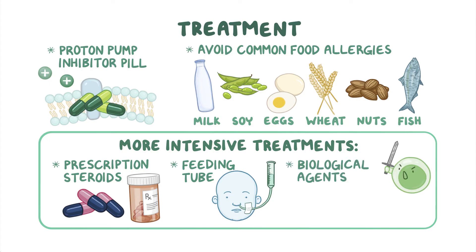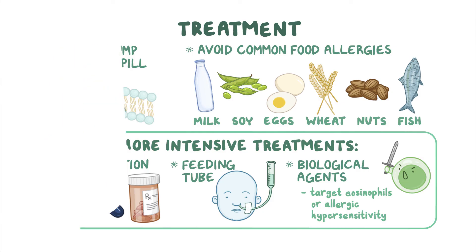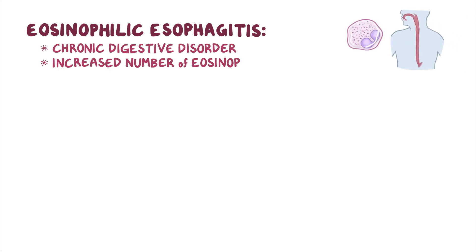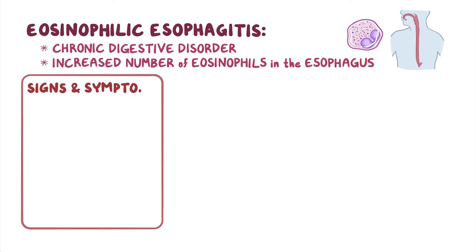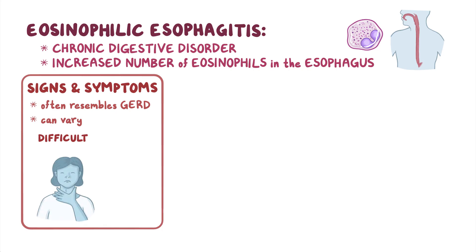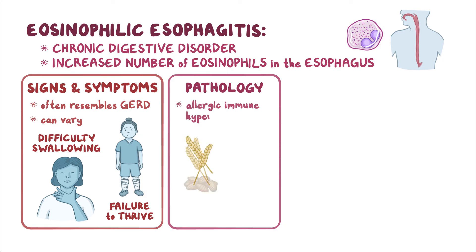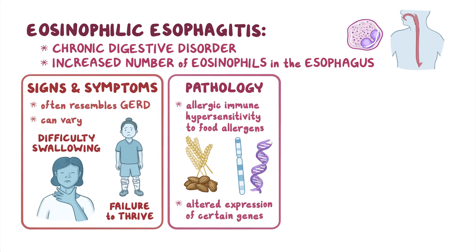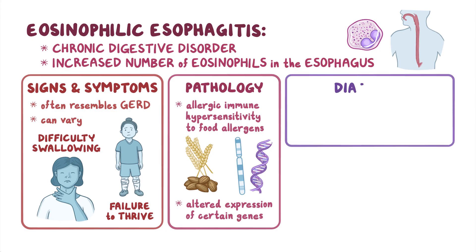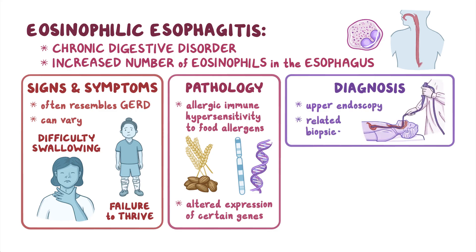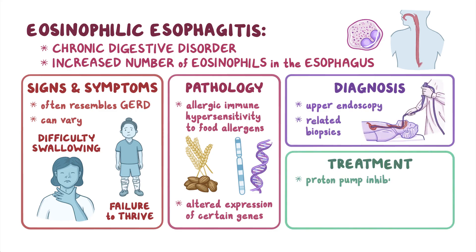A number of biological agents, especially those that directly target eosinophils or allergic hypersensitivity, are now being developed for the treatment of eosinophilic esophagitis. Eosinophilic esophagitis is a chronic digestive disorder in which there is an increased number of eosinophils in the esophagus. The signs and symptoms often resemble GERD and can vary from difficulty swallowing to failure to thrive in children. The increased eosinophils are typically caused by allergic immune hypersensitivity to food allergens and altered expression of certain genes. After a clinical evaluation, diagnosis is established by an upper endoscopy and related biopsies. Most people can be treated with proton pump inhibitors, dietary treatment, or topical glucocorticoids or steroids.